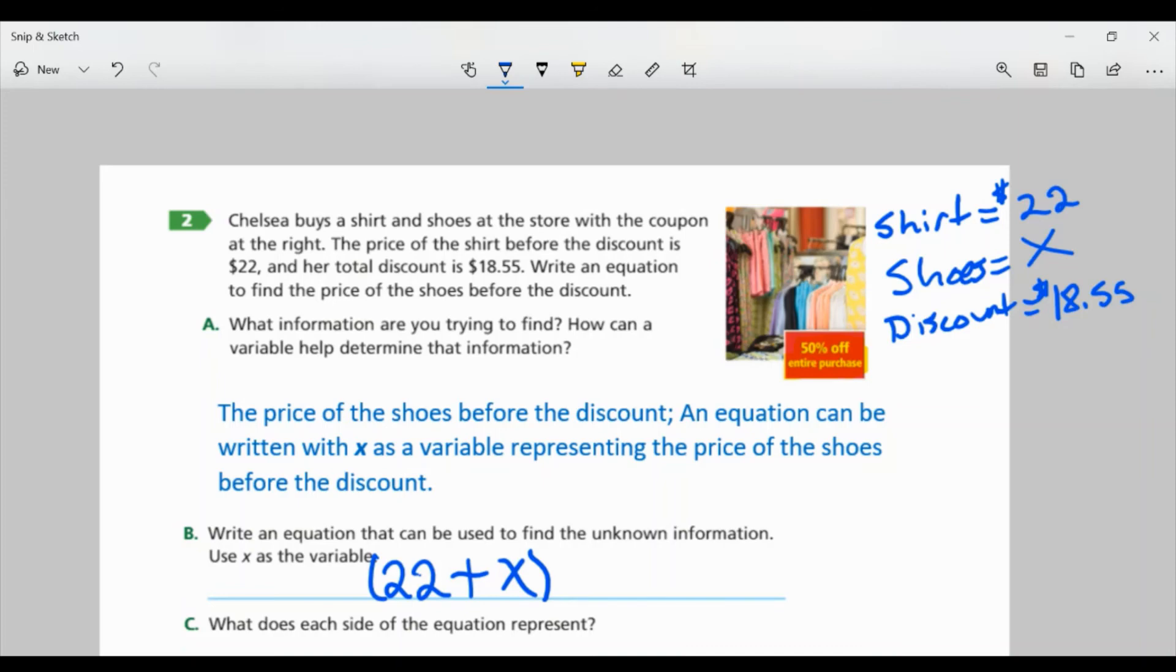And I know it's 50% off. Both of these added together, I'm going to take 50% off. And for this, I'm just going to use a percentage as a decimal. Remember, 50% is 0.5 or 0.50. This is equal to our discount, right? When we do this, we get 18.55.